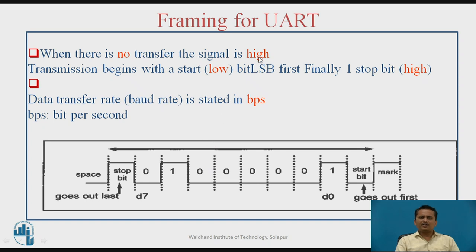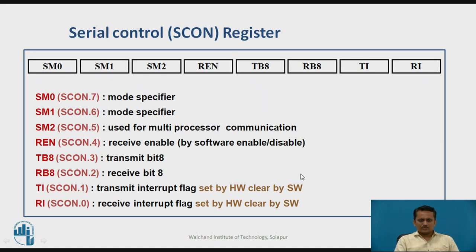Since it is asynchronous communication, frame formation is required. The frame contains data bits D0 to D7 as the actual data, along with one start bit and one stop bit added as framing. So although you are sending 8-bit data, the actual transmitted frame is 10 bits. You also need to decide at what baud rate you will be sending the data.